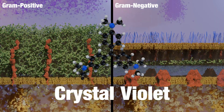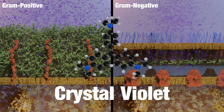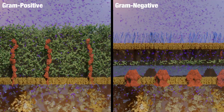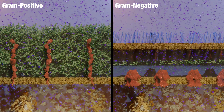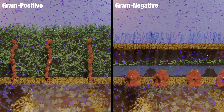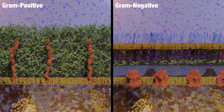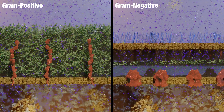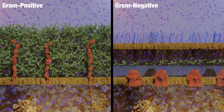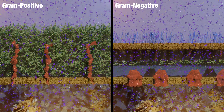The stain starts with crystal violet, which penetrates and stains both bacteria purple. Next, iodine is added. It forms large complexes with the dye inside the cells.